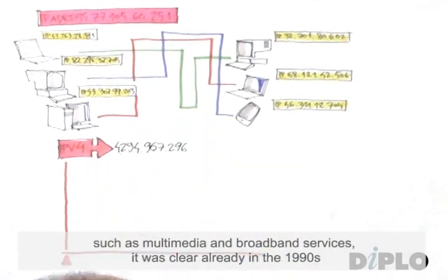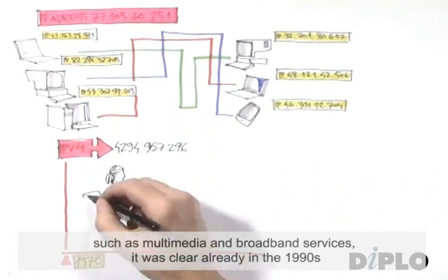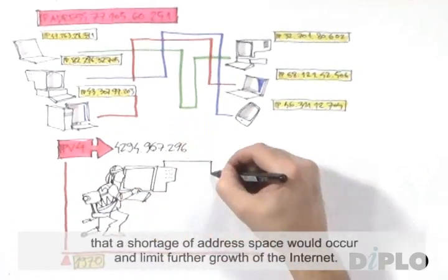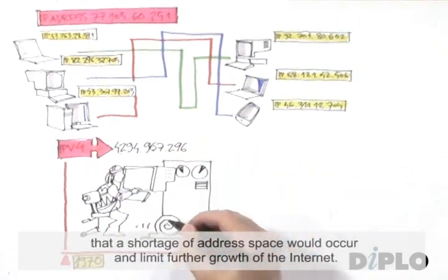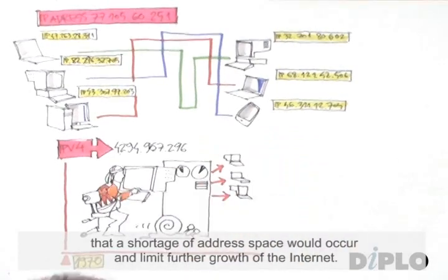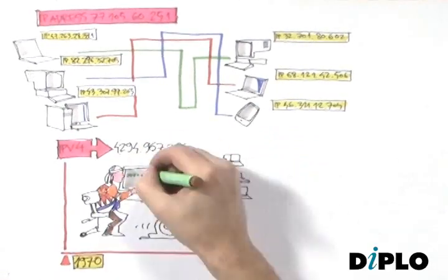With the growth in the number of users and with new applications such as multimedia and broadband services, it was clear already in the 1990s that a shortage of address space will occur and limit further growth of the Internet.